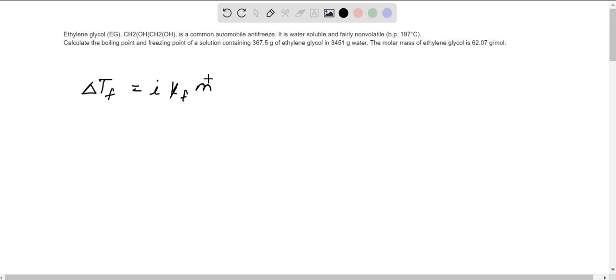Here i is Van't Hoff factor, which is one for ethylene glycol because it is a non-electrolyte. Kf is the freezing point constant, which is equal to 1.86 degrees per m or per molal.